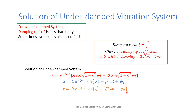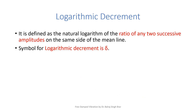For the present lecture, the solution x = D·e^(−ζωt) cos(√(1−ζ²)ωt + φ₂) will be used. Here, ω·√(1−ζ²) is the damped frequency, which we already know. Coming to the topic logarithmic decrement, it is defined as the natural logarithm of the ratio of any two successive amplitudes on the same side of the mean line. The symbol for logarithmic decrement is delta.